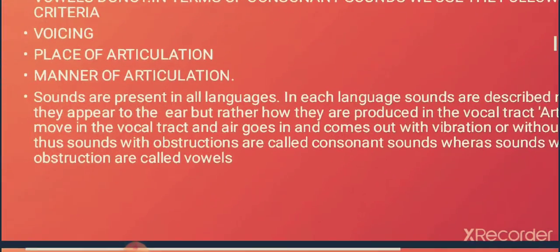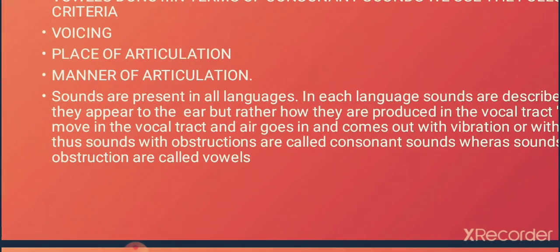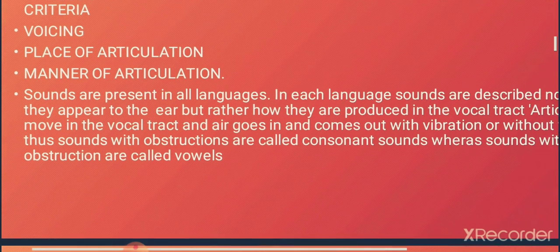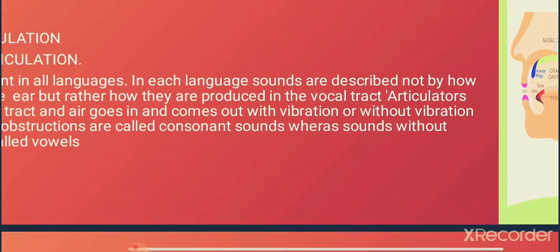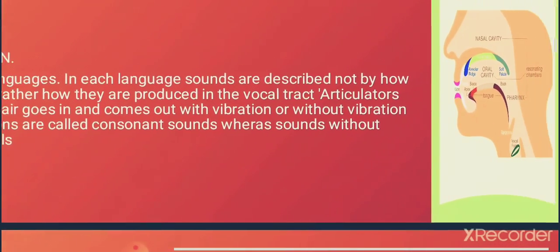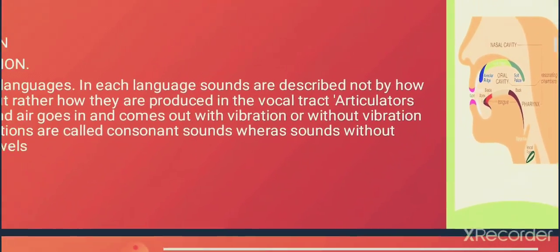In the production of consonant sounds, we use the following three criteria: voicing, place of articulation, and manner of articulation. Sounds are present in all languages, and in each language sounds are described not by how they appear to the ear, but rather by how they are produced in the vocal tract.